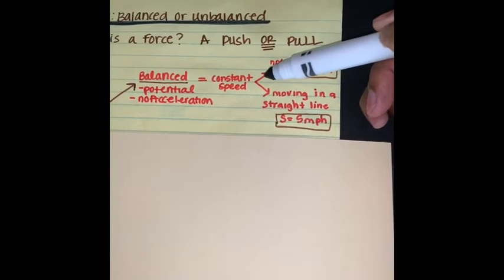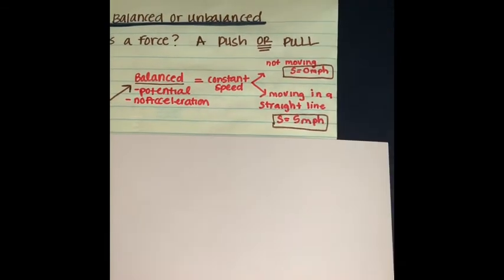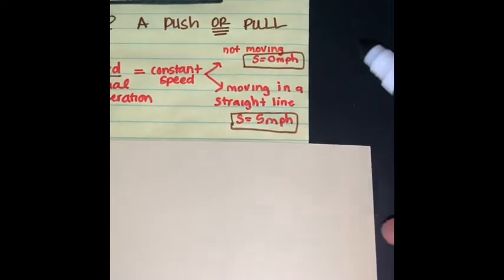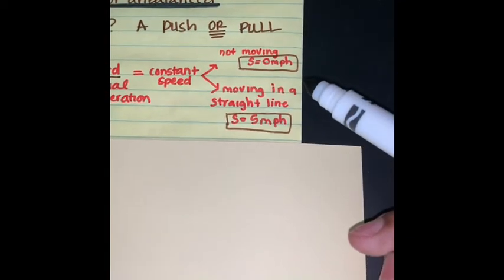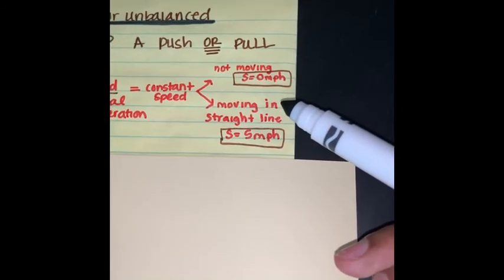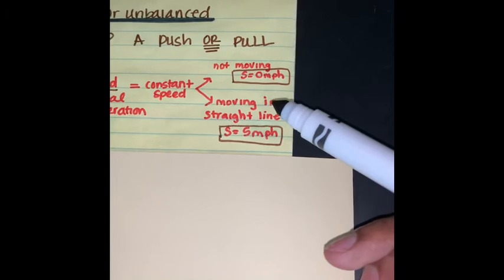When we say it is a constant speed, that means that it is either not moving. My speed for example will be 0 miles per hour, which could just mean maybe I stopped at a stop sign or I am not going anywhere.